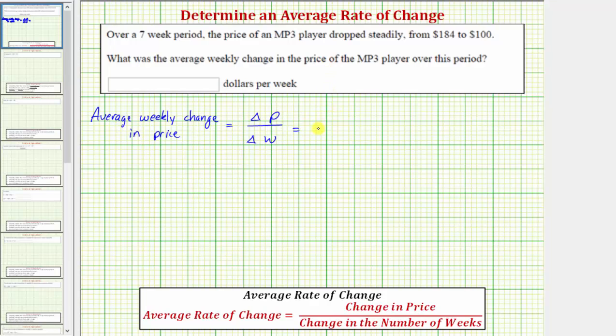Now to find the change in price, we begin with the new price and subtract the starting or original price. Well the new price is a lower price of $100, so we have $100 minus the original starting price of $184.